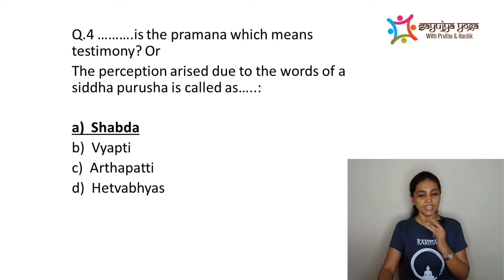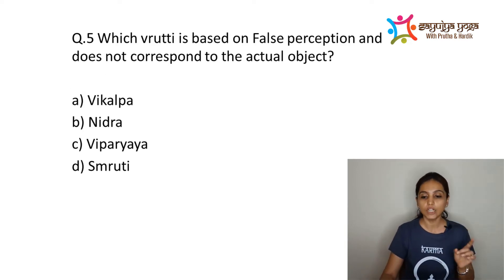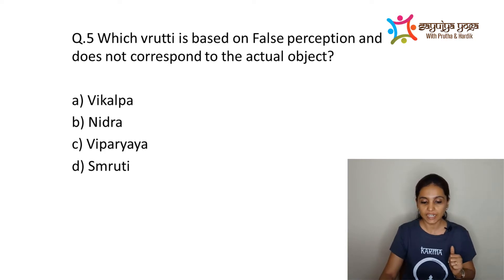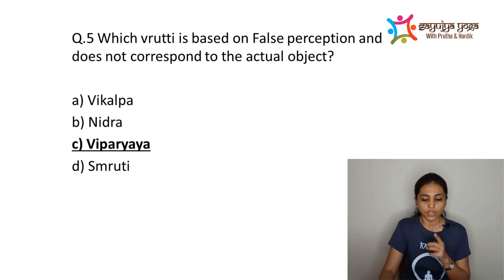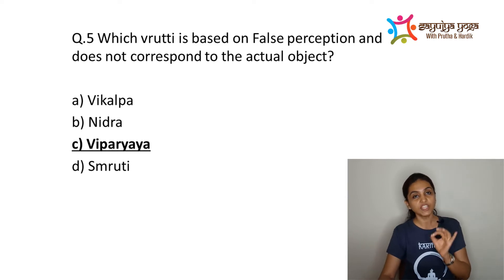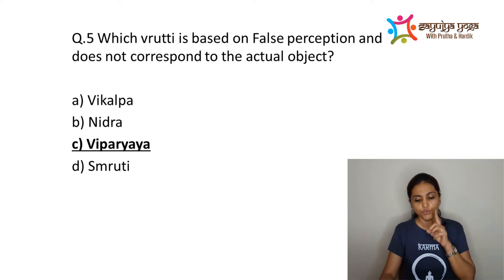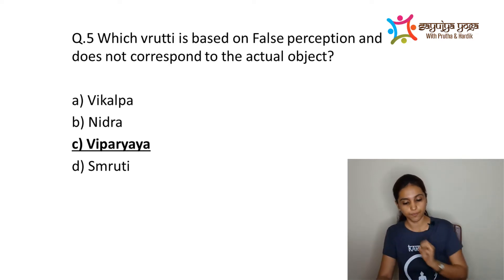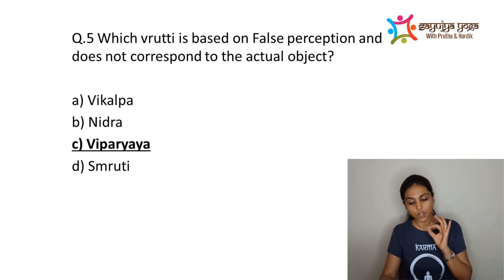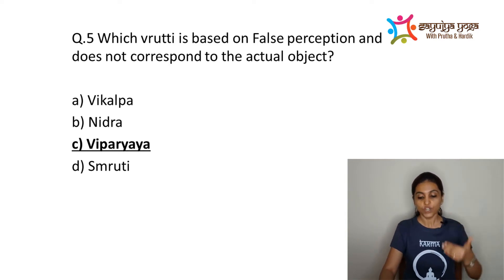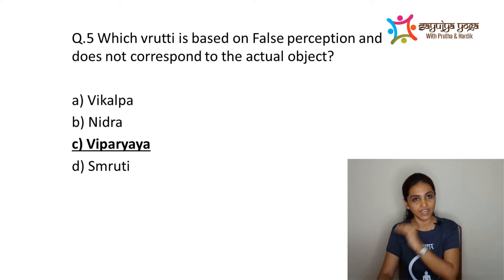The next question: which Vrtti is based on false perception and does not correspond to the actual object? Options are Vikalpa, Nidra, Viparyaya, or Smriti. The correct answer is Viparyaya, found in Sutra 0.8: Viparyaya Mithyagyanam Atadarupa Pratistham. A Chitta Vrtti which creates Mithyagyanam is known as Viparyaya Vrtti. In Viparyaya, there is really no object existing on which the knowledge may be based — that is why it is Atadarupa Pratistham. For example, when we mistake a rope for a snake, our knowledge is incorrect — that is Mithyagyanam, which is Viparyaya.